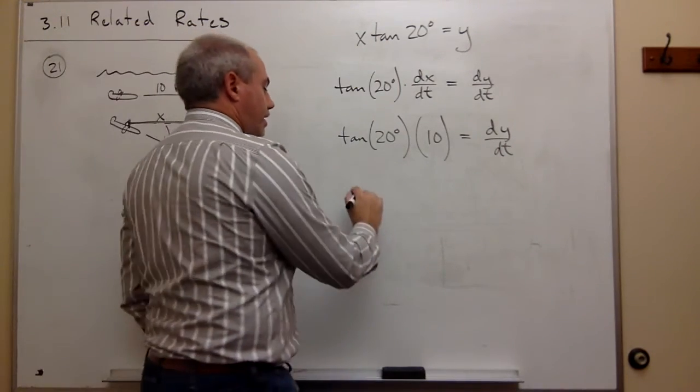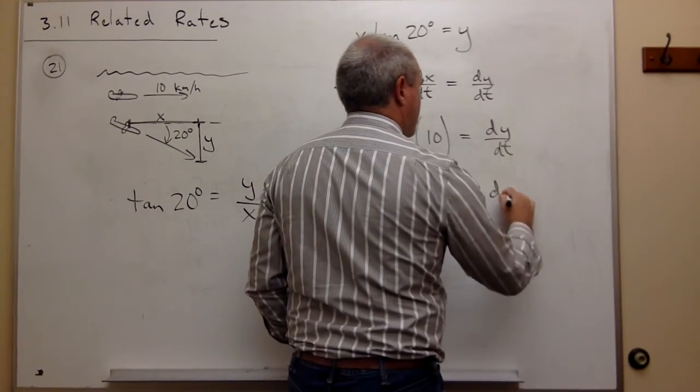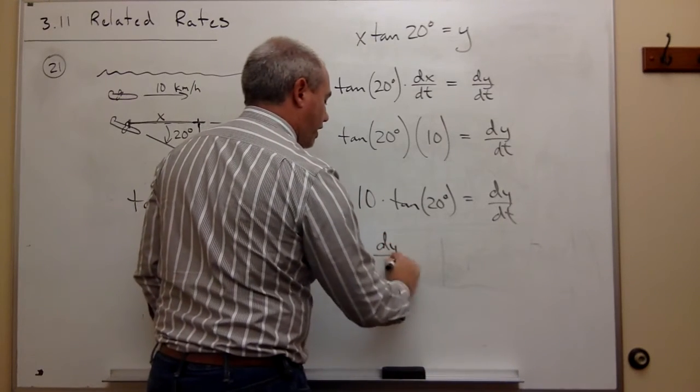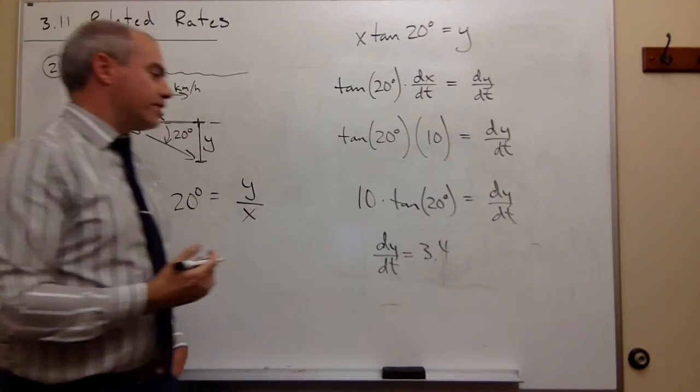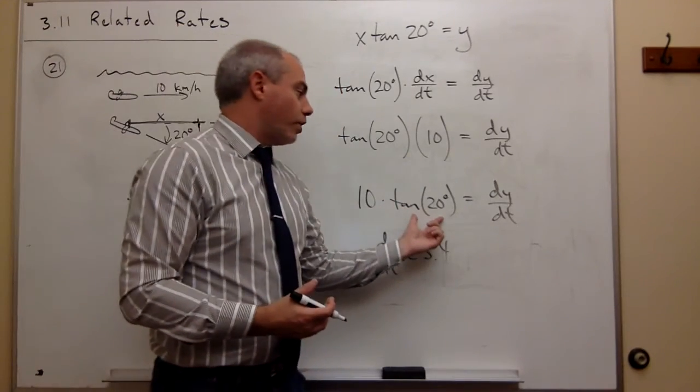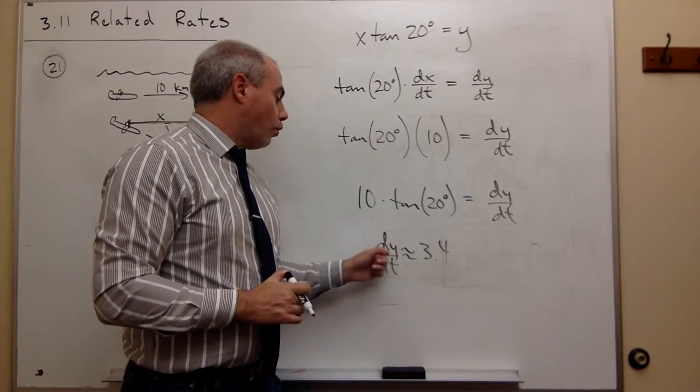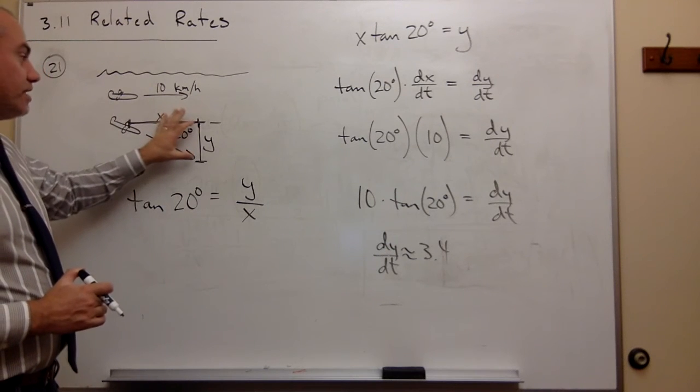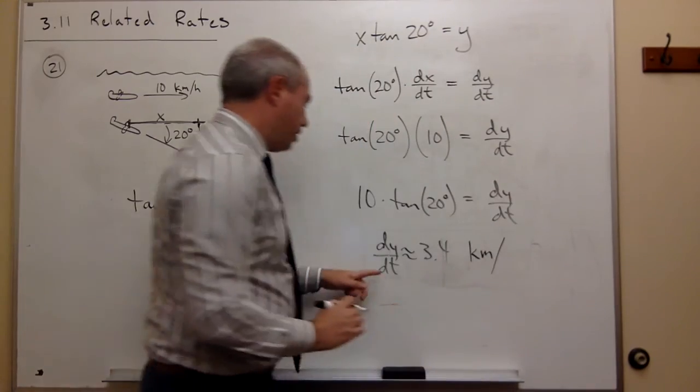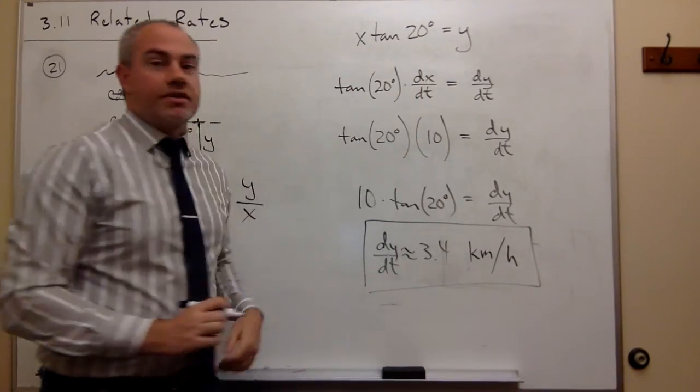What I end up with is 10 times the tangent of 20 degrees equals dy/dt. If you punch this into your calculator, you'd get something like 3.4. So dy/dt is approximately 3.4. What is the units on this? Well, y in this problem is a distance measured in kilometers, so this is 3.4 kilometers per time, and time in this problem is measured in hours. So it's 3.4 kilometers per hour, and this thing would be diving.